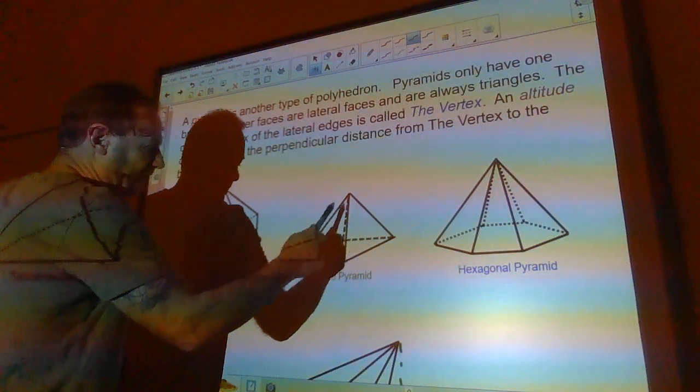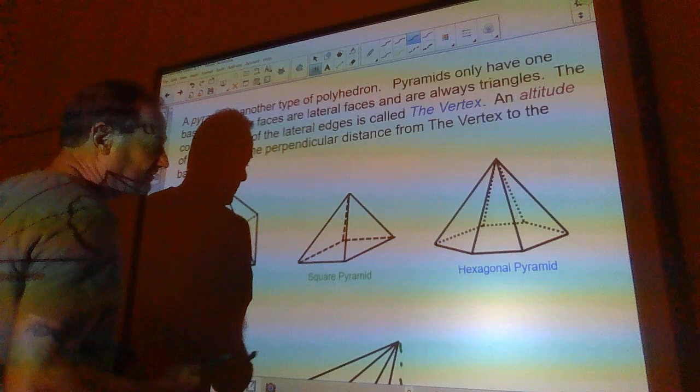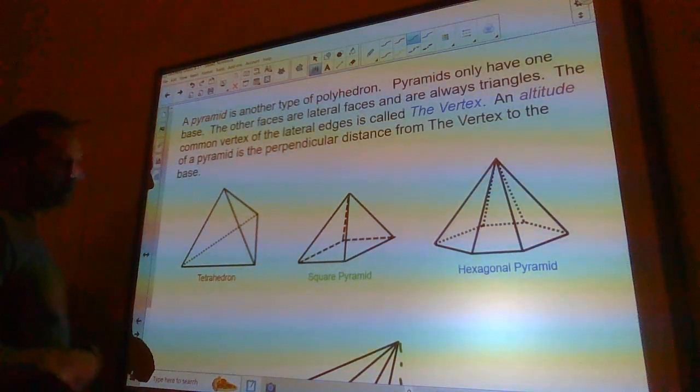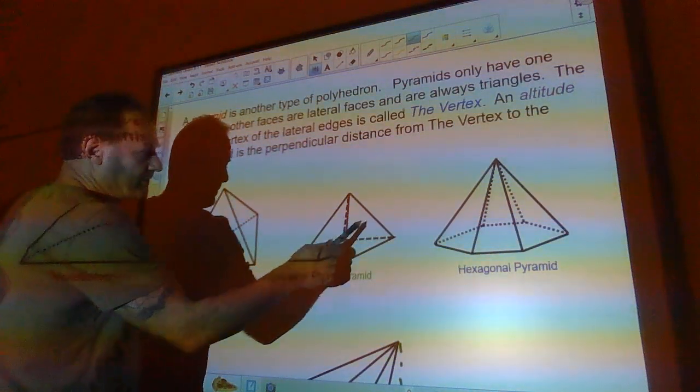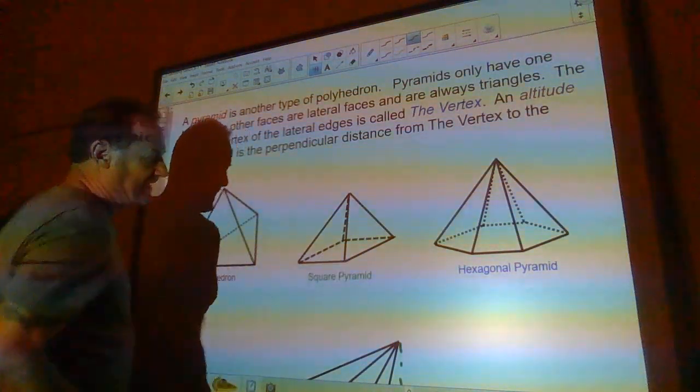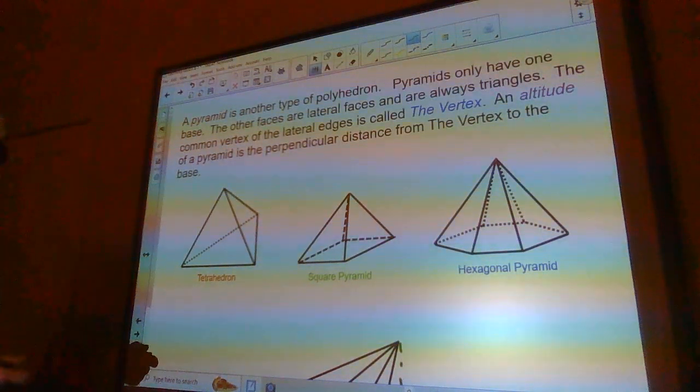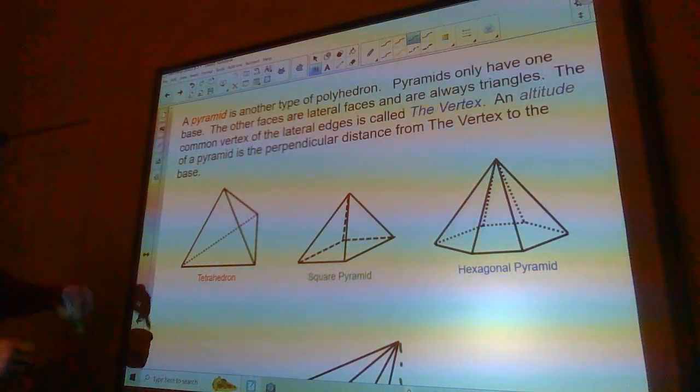It has four lateral faces and a base, which makes a total of five faces. And it's got one, two, three, four, five, six, seven, eight edges. The square pyramid does. And it's got five vertices.